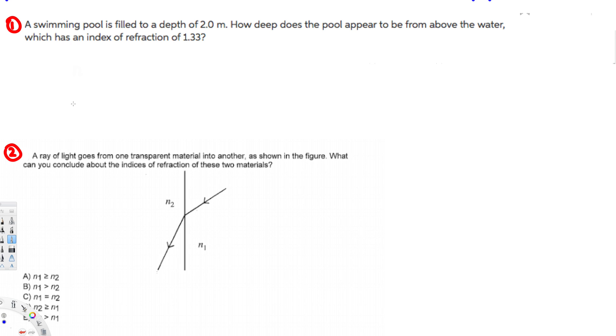Hey, what's going on guys? Let's do this problem right here. This question is asking: a swimming pool is filled to a depth of 2 meters. How deep does the pool appear to be from above the water, which has an index of refraction of 1.33? Now let's see how we can figure it out.